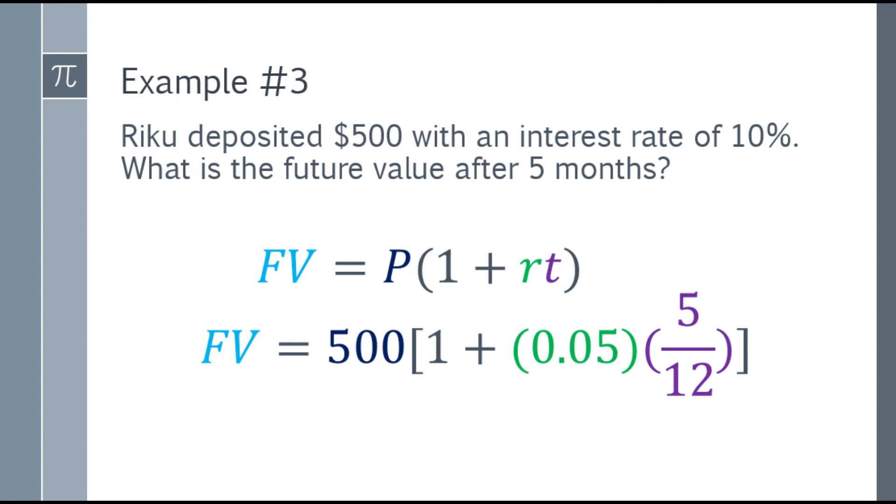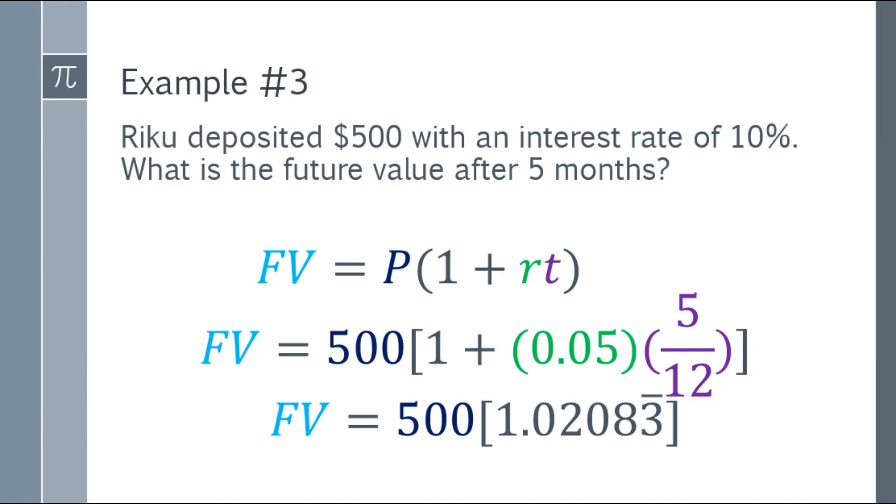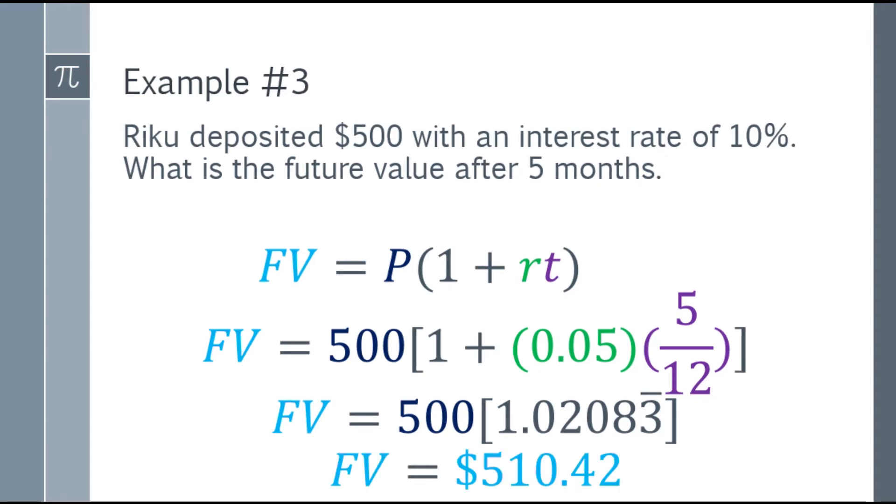So the 0.05, we multiply by 5 over 12, then add 1, and the answer will be 1.02083, repeating decimal. I suggest that you do it continuously. So then that answer, we multiply by 500, and the final answer will be 510.42. So if you deposit 500 dollars in the bank, with simple interest at 10%, how much will you get after 5 months? So it will become 510.42.